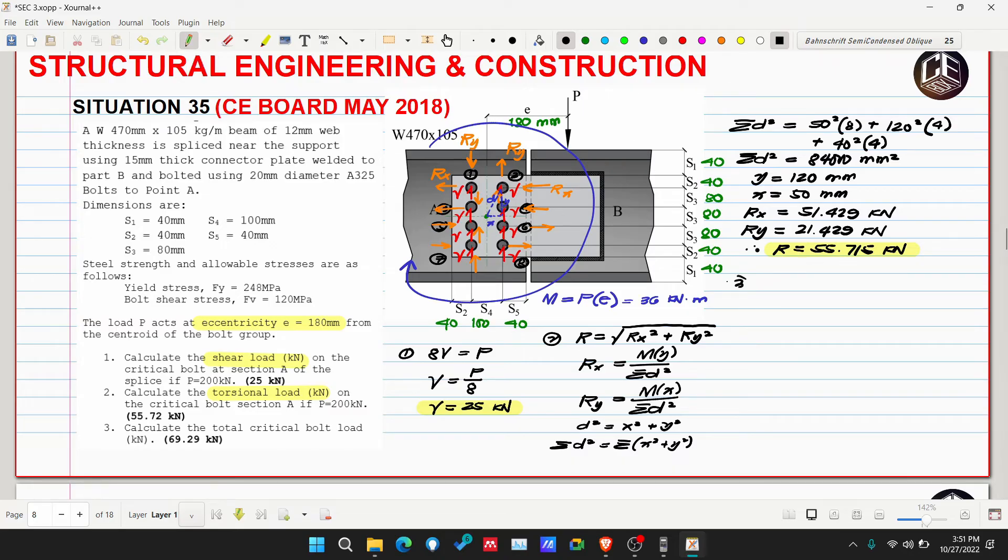Now for number 3, calculate the total critical load. What does total critical load mean? This is the effects of force P in terms of shear - those are our shear forces - and in terms of moment. So we'll call this RT or total resultant, equivalent to square root of summation of R vertical squared plus summation of R horizontal squared. We just combine all the vertical and all the horizontal forces, but for the critical bolt. Where is that? Let's look at bolt 1: the shear force is upward but the Ry due to torsion is downward, so they'll subtract. Of course, we want to get the critical, so we want a large RT.